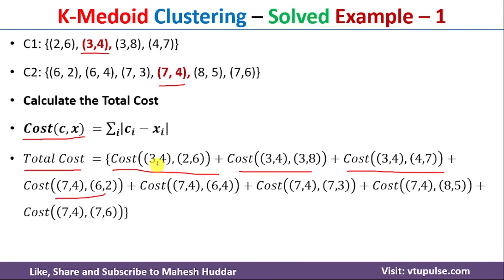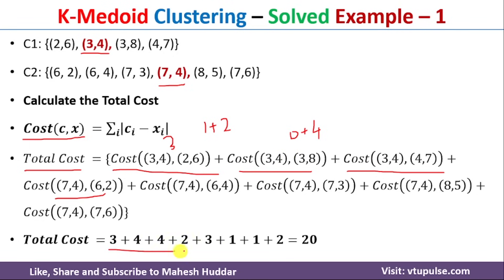For cost(3,4 → 2,6): |3−2| + |4−6| = 1 + 2 = 3. For cost(3,4 → 3,8): |3−3| + |4−8| = 0 + 4 = 4. Similarly, all individual costs are calculated for both clusters. Adding all these individual costs together gives a total cost of 20 for the current cluster configuration.